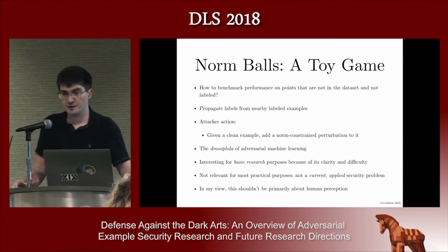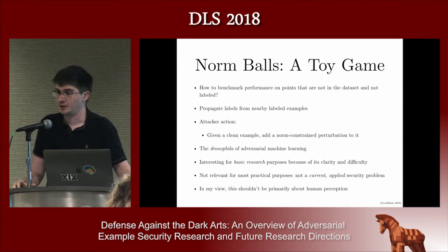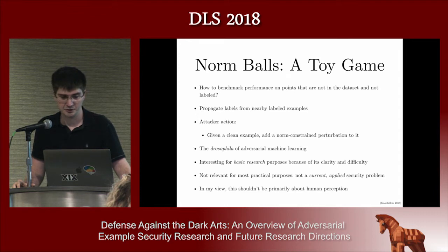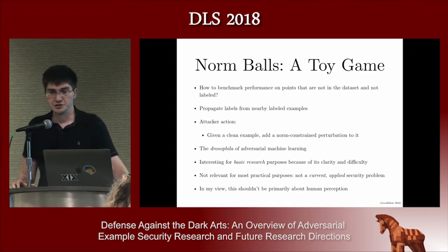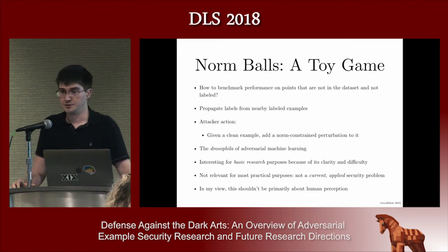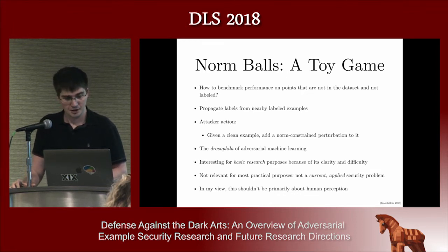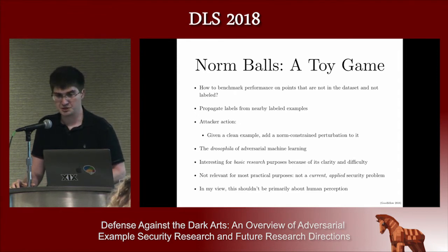I wrote one of the papers that proposed one of the popular metrics. In my 2014 paper 'Explaining and Harnessing Adversarial Examples,' I suggested we measure the error rate of a classifier on adversarial examples created within a norm ball of clean examples. The basic idea was to study the performance of machine learning models on non-IID data — we need some way of labeling points that do not occur in the dataset.